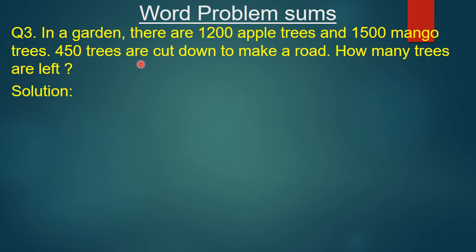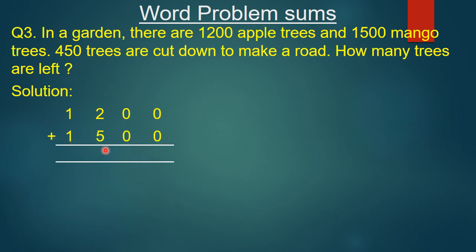So first we will add 1200 and 1500. We write 1200 on top, then 1500 below — these are apple trees and mango trees. Now we add: ones place 0 plus 0 is 0; tens place 0 plus 0 is 0; hundreds place 2 plus 5 is 7, write 7; thousands place 1 plus 1 is 2, write 2. Result is 2700. Our sum is not completed yet.